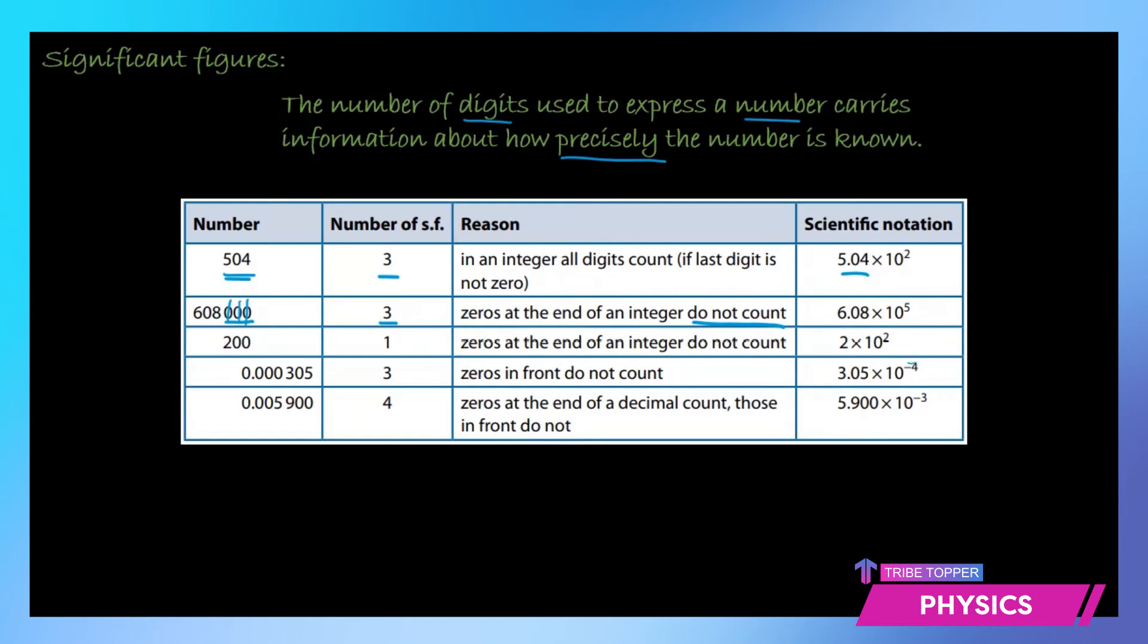Why is it 10 to the power of 5? That is not based on the significant figures. The 10 to the power of 5 comes from the number itself. So you put a decimal here and how many digits you have afterwards? 1, 2, 3, 4, 5. Next number is 200. The zeros at the end of an integer do not count. So 200 has only one significant figure that is 2. And in scientific notation that's 2 times 10 to the power of 2.